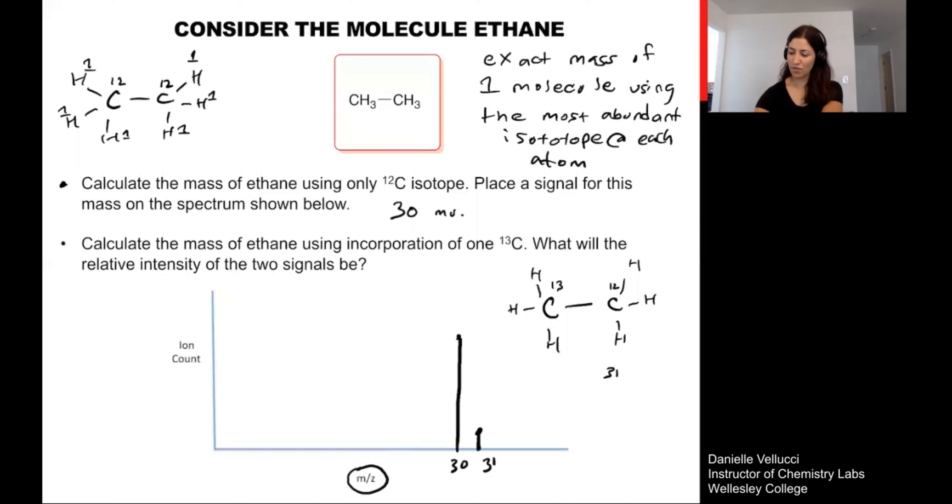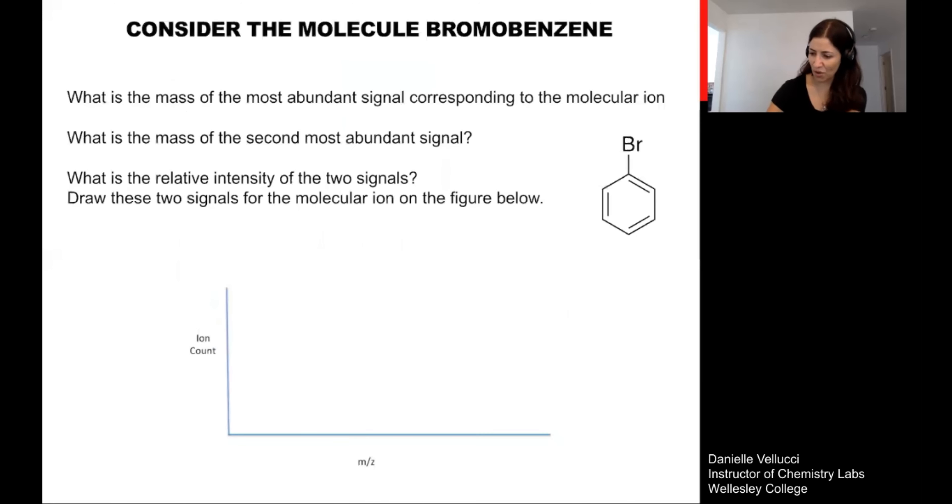So this molecule here, ethane, tends to be reported by this signature in the mass spec. When you see this extra peak, it's coming from the incorporation of the less abundant C13.